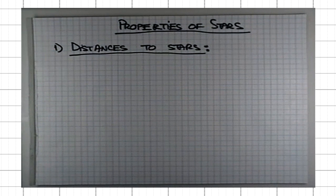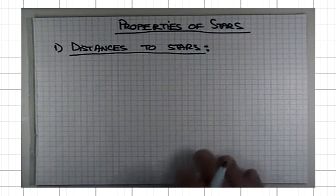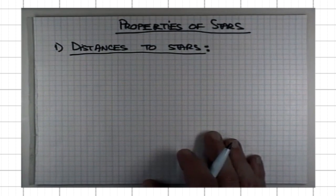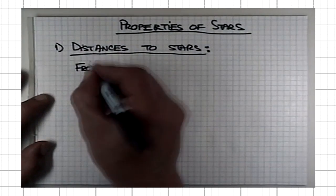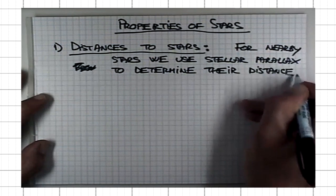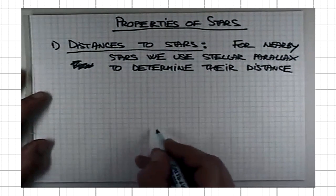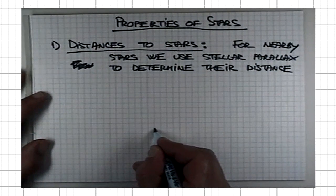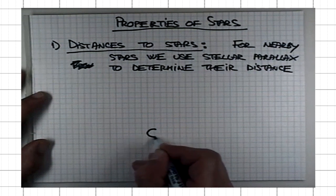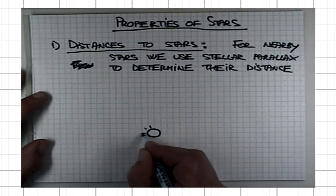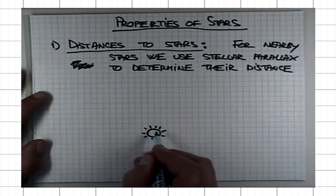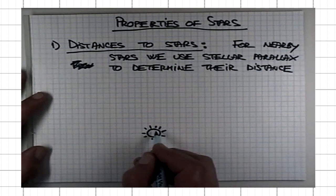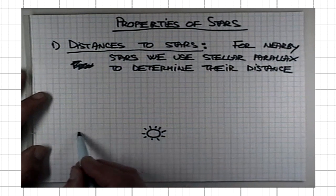For nearby stars, we use stellar parallax to measure their distance from us. We discussed before the stellar parallax that the lack of it or inability to detect it by the naked eye was often used throughout history as an argument against the heliocentric or sun-centric model.